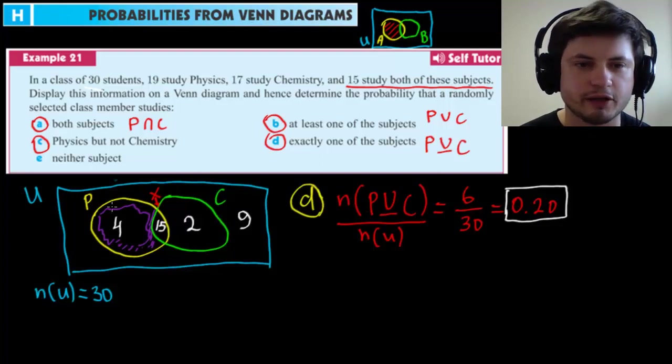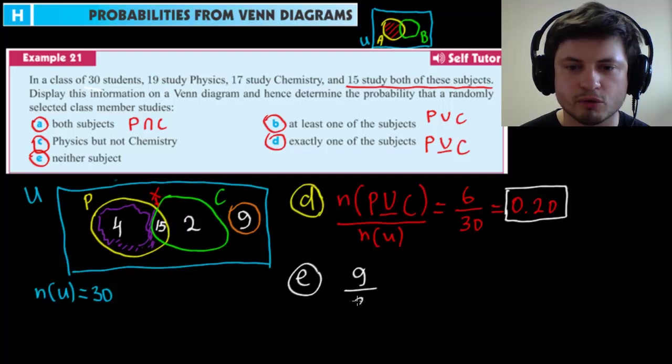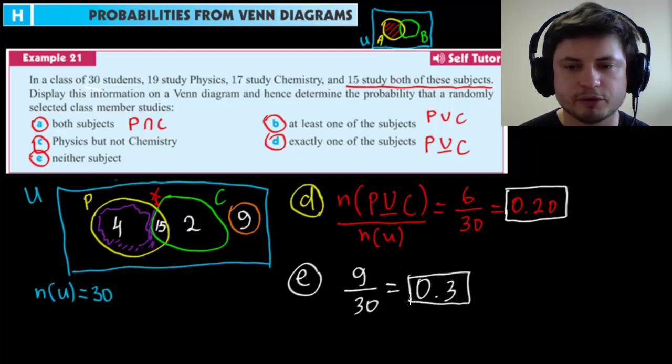And the last question is neither subject. Well, that's really easy because we already know what neither subject is because it's actually right here. So that's nine out of 30 for question E. Nine out of 30 or 0.3. So 0.3 or 30% chance that this person that you randomly select will not be studying either subject.